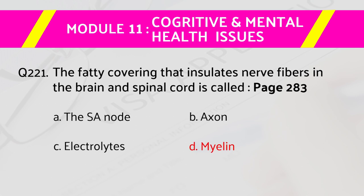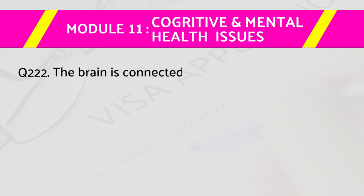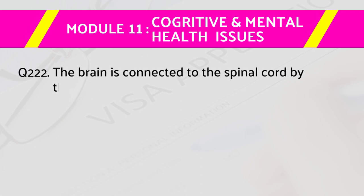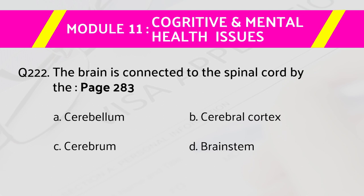Question number 222: The brain is connected to the spinal cord by — page number 283. Answers are: a) the cerebellum, b) cerebral cortex, c) cerebrum, d) brainstem. The right answer is d) brainstem.